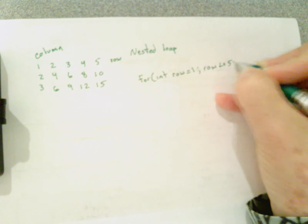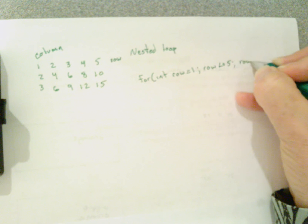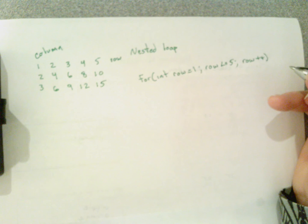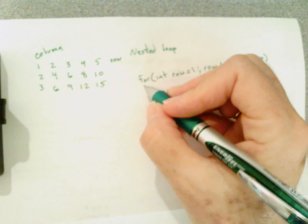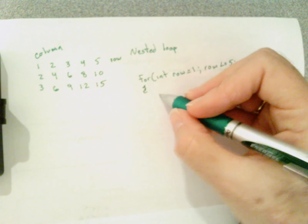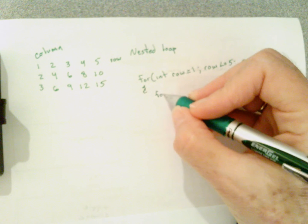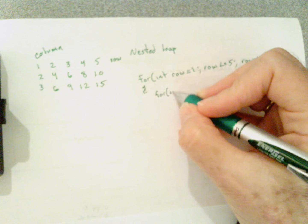That's going to loop five times where row equals one all the way up to row equals five. Inside that loop I need a loop that's going to control each column.